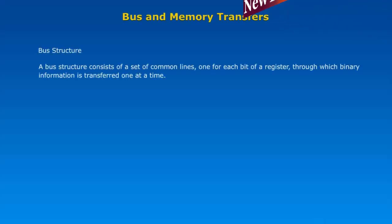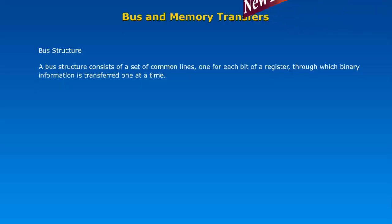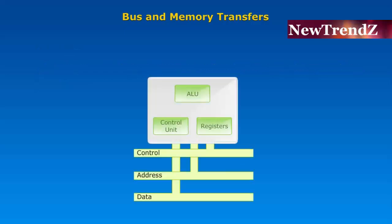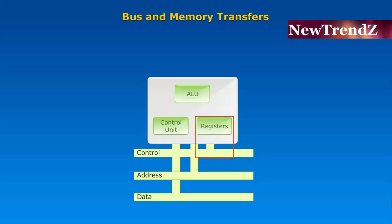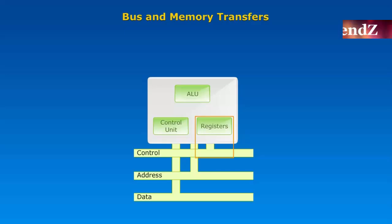A bus structure consists of a set of common lines, one for each bit of a register, through which binary information is transferred one at a time. Control signals determine which register is selected by the bus during each particular register transfer.